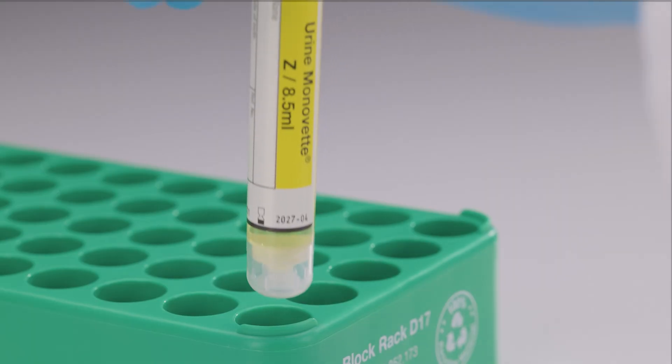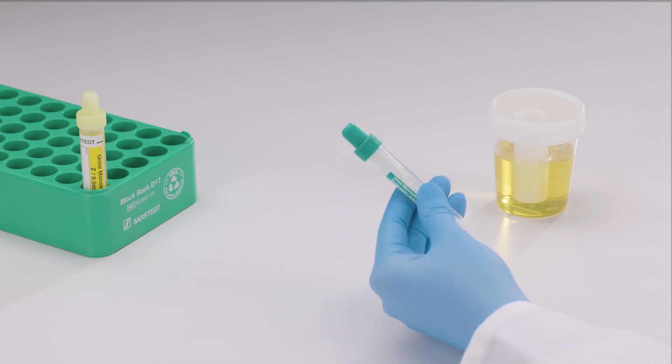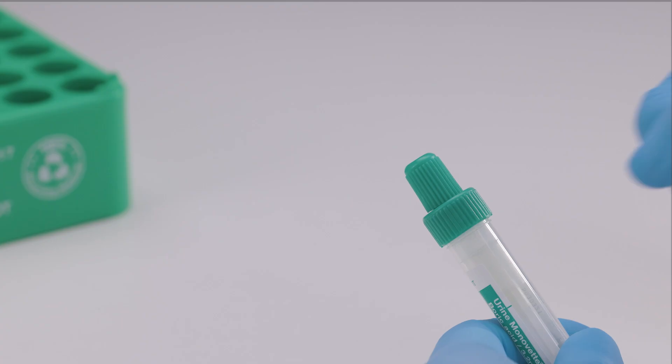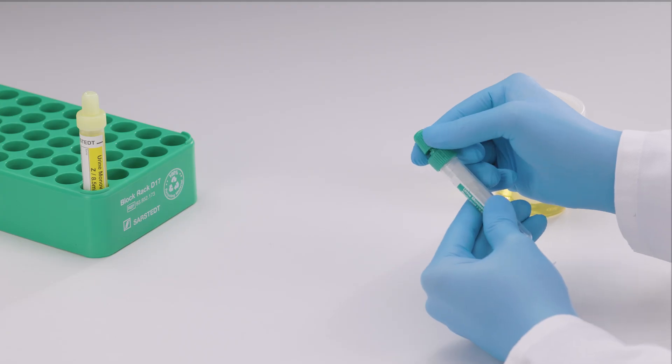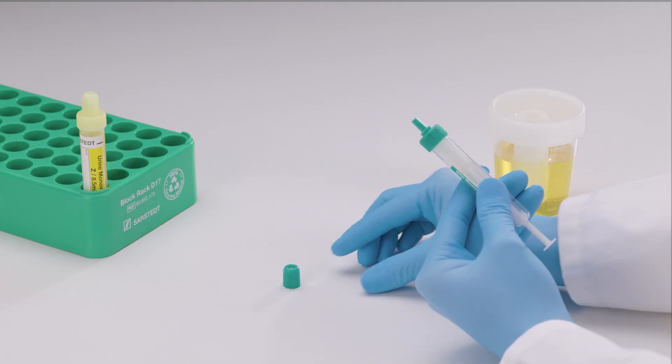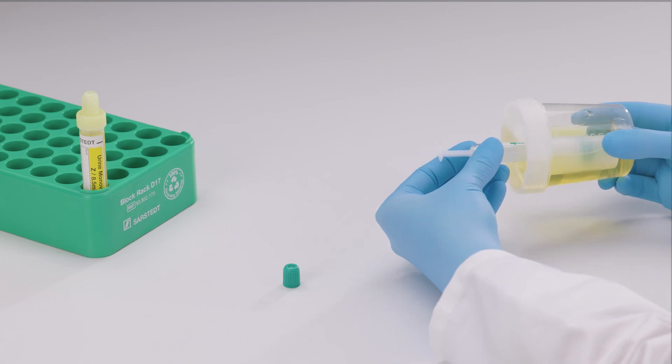If required, proceed with a urine monovette boric acid. Hold the urine monovette upright with the tip pointing upwards. Tap the urine monovette twice to settle the boric acid at the bottom of the tube. Remove the stopper from the tip of the urine monovette. Repeat the same process as previously.